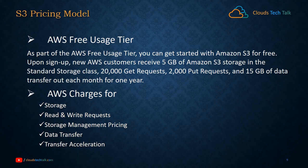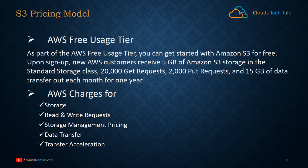AWS charges based on five different dimensions. First, storage type — for the initial 5 GB it is free, but beyond that you are charged per GB by storage type. Second, read/write requests — the first 20,000 GET requests are free, beyond that you are charged; and PUT requests beyond 2,000 are also charged. Other dimensions include storage management pricing, data transfer — if you move files between storage types or transfer between regions, AWS charges accordingly — and lastly transfer acceleration, an important aspect of S3 that incurs additional charges if enabled.